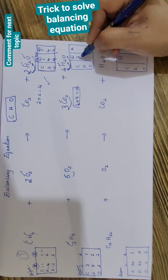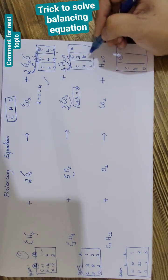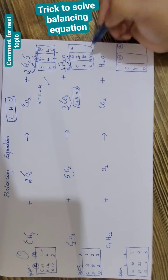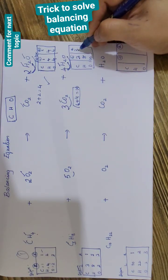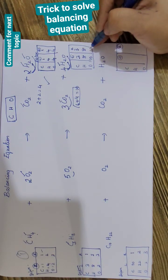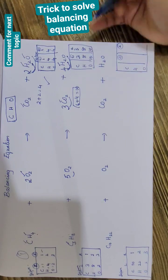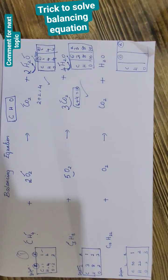So three carbons, eight hydrogens, ten oxygens on the left side. Three carbons, eight hydrogens, and ten oxygens on the right side. So our equation is balanced.